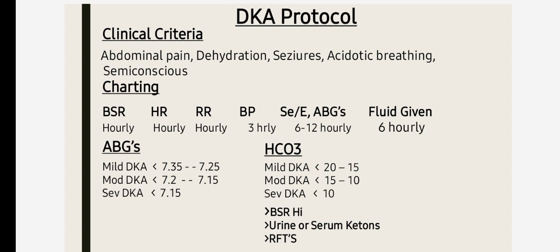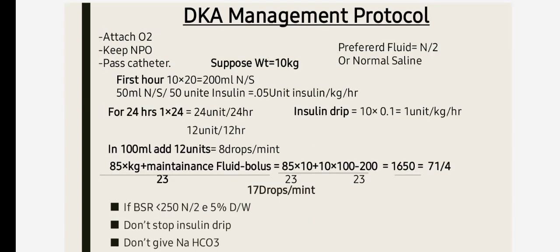Depending upon the labs and clinical condition, DKA needs to be managed over 24 to 48 hours. First, do the charting to monitor BSR, heart rate, respiratory rate, blood pressure, serum electrolytes, and ABGs every 6 to 12 hours. For fluids, give a bolus of normal saline at 20 ml per kg in the first hour.